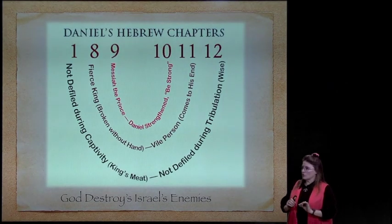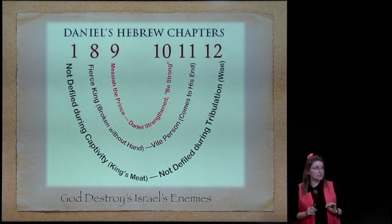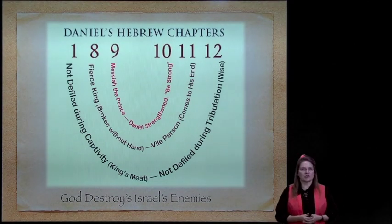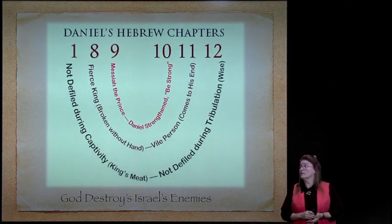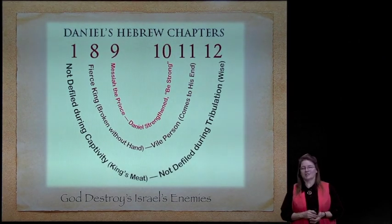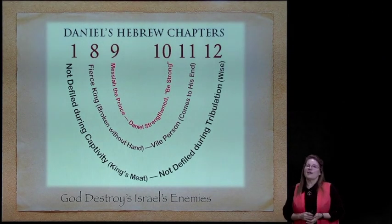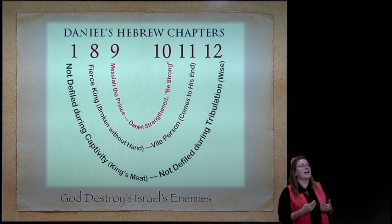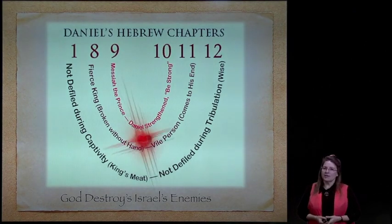If you go to the center—where the main message usually can be found in a chiastic literary structure—the fierce king is broken without hand, which is exactly what Isaiah says, and the vile person comes to his end. We're going to take a look at that battle in old Jerusalem in just a minute.